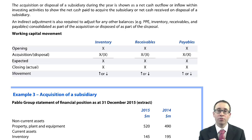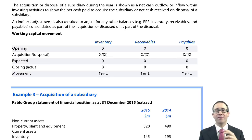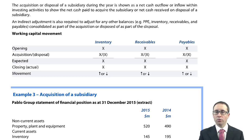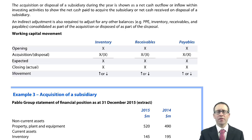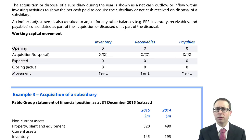In the real world, there are likely to be acquisitions and disposals that take place during a year. In our exam, it's going to be one or the other — it won't be both. You will either have an acquisition or a disposal. The theme tends to have been that in cash flow questions in the past, it tends to have been an acquisition. But that doesn't mean the disposal is not examinable, so we need to be comfortable with both.